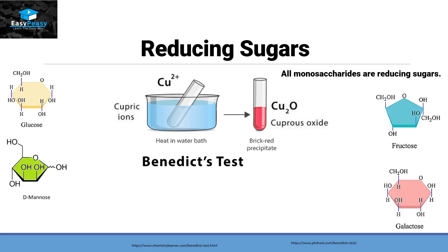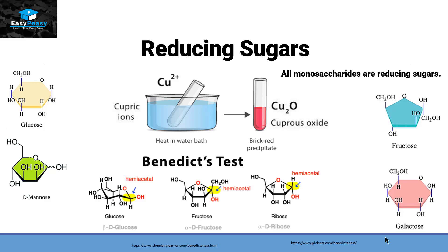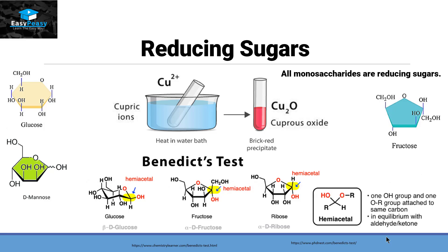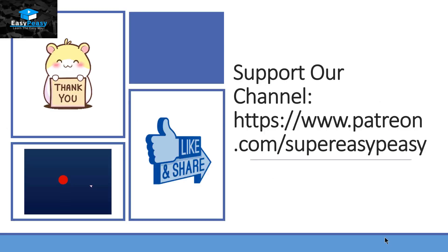What makes monosaccharides reducing sugars? The answer lies in the hemiacetal group available on each monosaccharide. A hemiacetal is a carbon atom attached to a hydroxyl group at one end and an OR group on the other end, and it is in equilibrium with an aldehyde or ketone. Since every monosaccharide molecule contains a hemiacetal group, all monosaccharides are reducing sugars.